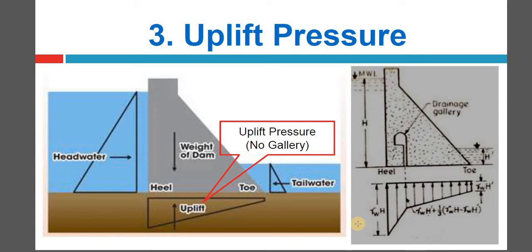For a gravity dam without provision of pressure relief drainage gallery, the uplift pressure force per unit length of dam is: U = γ_w × [(H + H') / 2] × T × 1, where T is the thickness of the base of the dam and γ_w is the unit weight of water. Uplift pressure acts against the self-weight of the gravity dam, so we need remedial action — we can reduce uplift pressure.